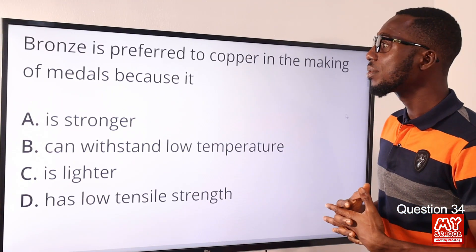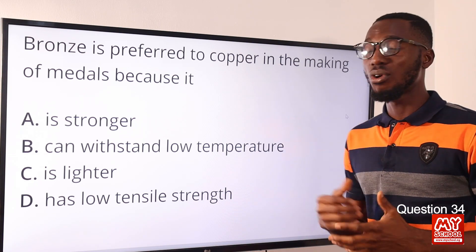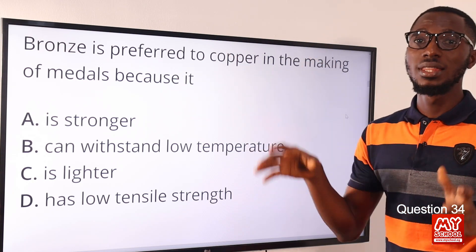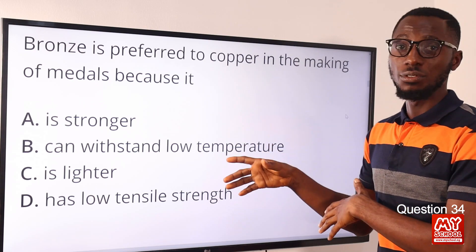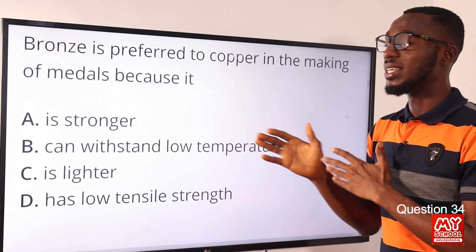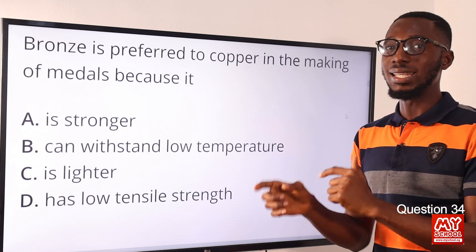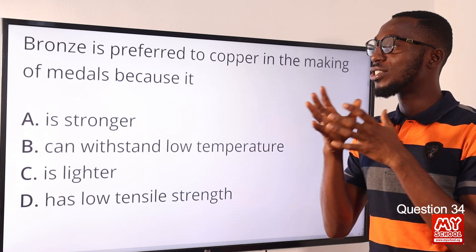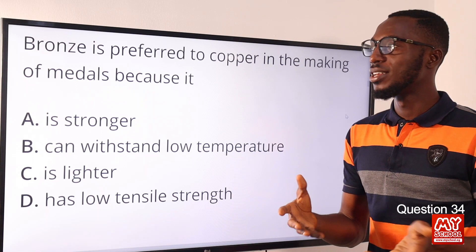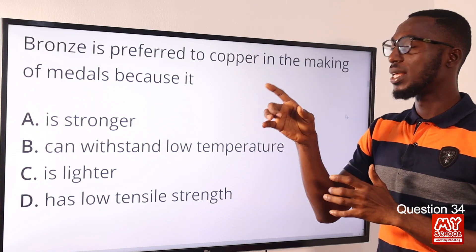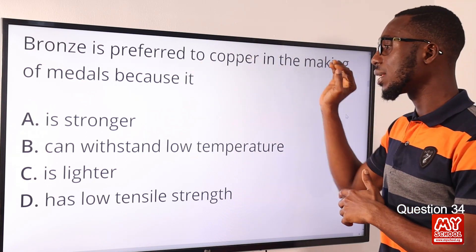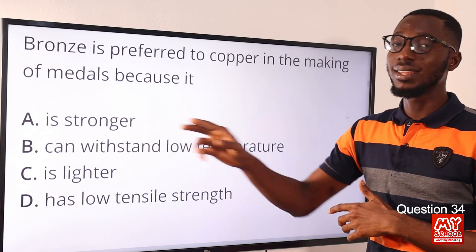Question 34. Bronze is preferred to copper in the making of coins, sculptures, and general metalworks. Bronze is a combination of copper and tin — 90% copper and 10% tin. It is stronger than copper, it can withstand chemical attacks, and it has a more attractive appearance. That is why we prefer to use bronze instead of copper in making of metals. Bronze is preferred to copper because it is stronger. Option A is the correct option.